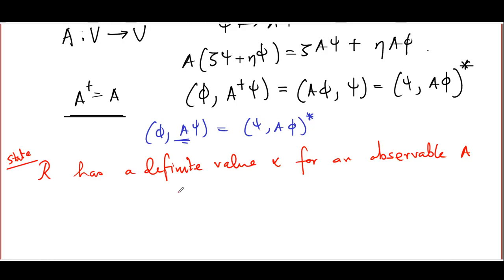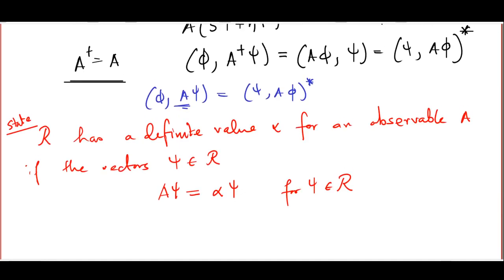Now, this situation, that the state has a definite value of alpha, occurs if the vectors chi belonging to the ray has the following property. A acting on chi is alpha chi. Note that since all the vectors in a ray are actually linear multiples of each other, if one of them satisfies A chi equals alpha chi, all of them do. So basically, all you have to do is take a typical vector out of the ray, and apply the operator A on it, see whether it's returning a multiple of that vector, then the multiplying factor is the observed value, also known as the eigenvalue.